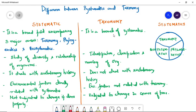Hello everyone, in this video we will learn the difference between systematics and taxonomy. Systematics is a broad field encompassing taxonomy, phylogenetics and biosystematics, while taxonomy is a branch under systematics.